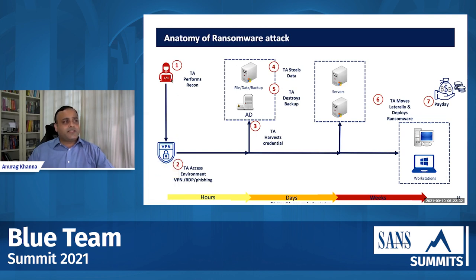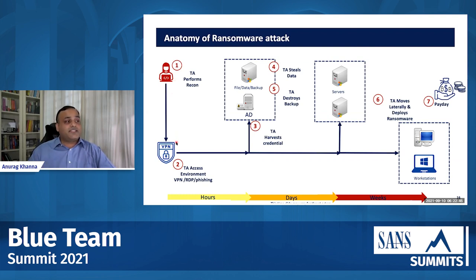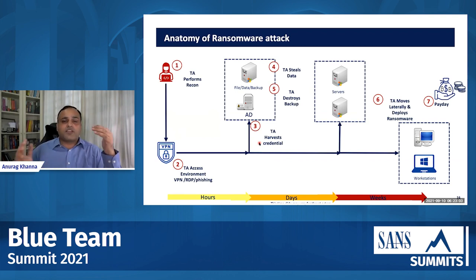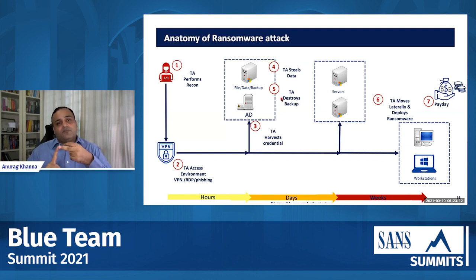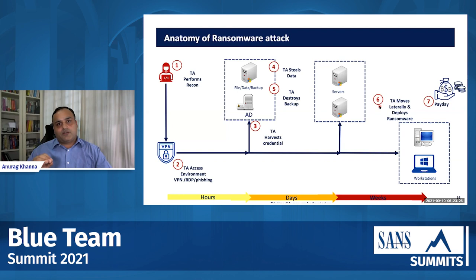Typically, the ransomware attack starts with a threat actor performing reconnaissance — trying to find the chinks in the armor, finding that vulnerability or initial vector to exploit and get access inside the environment. Once they have achieved that, they perform lateral movement and harvest and dump credentials. This is a very important stage. Often the aim is to gain domain privilege access across the environment. Once the threat actor has gained that, they steal data with the aim of performing extortion and destroy backups to make it difficult for the organization to recover. Once this has been done, the threat actor is ready to deploy ransomware on all systems or at least on critical systems.